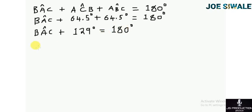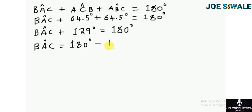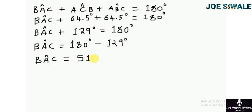Transposing 129 to the other side: angle BAC = 180 degrees − 129 degrees = 51 degrees.